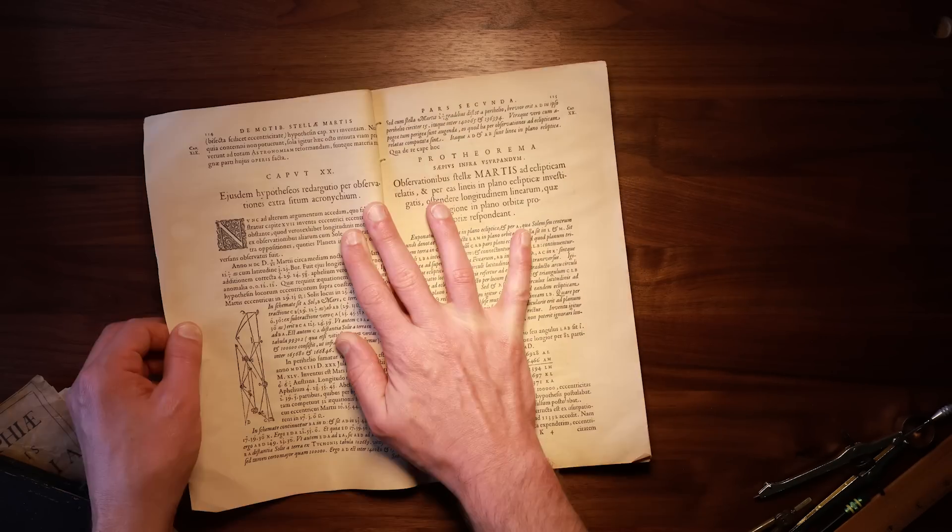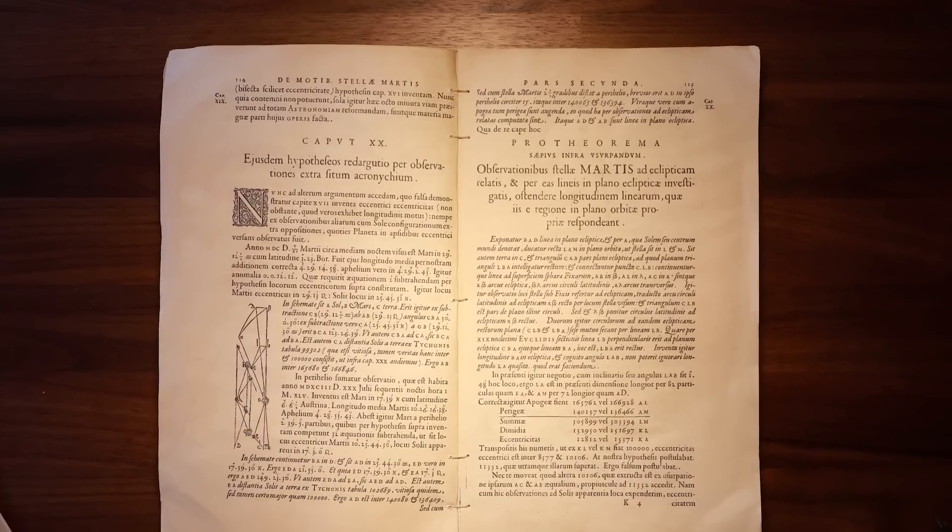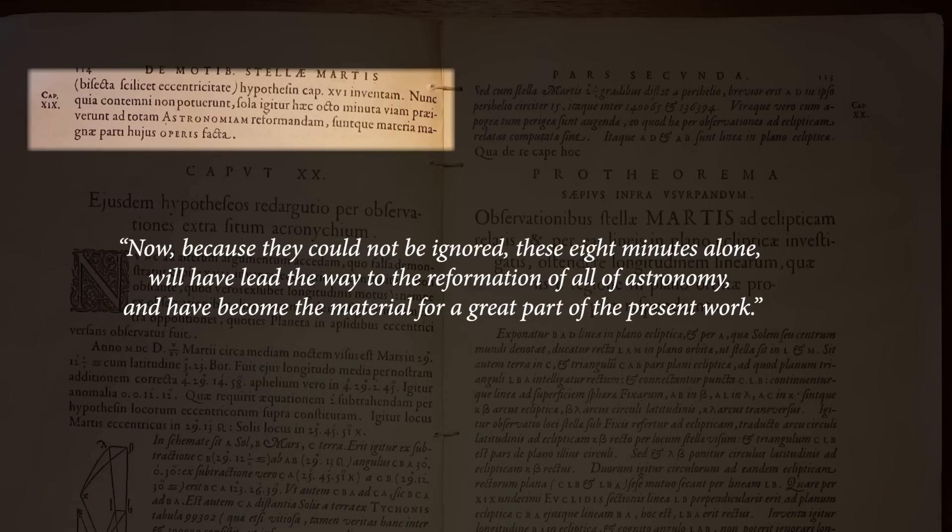Kepler ends chapter 19 of Astronomia Nova with a powerful prediction. Now, because they could not be ignored, these eight minutes alone will have led the way to the reformation of all of astronomy and have become the material for a great part of the present work. With Tycho out of the picture, Kepler was now free to rebuild astronomy from the ground up.